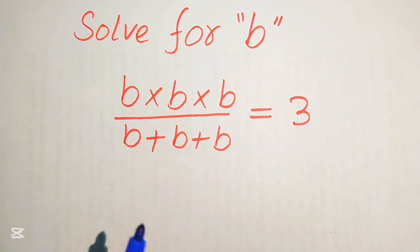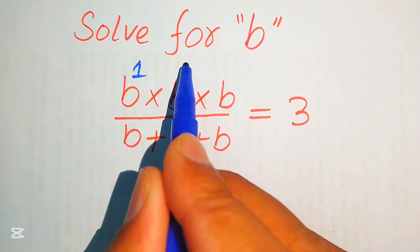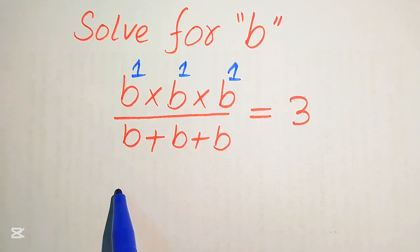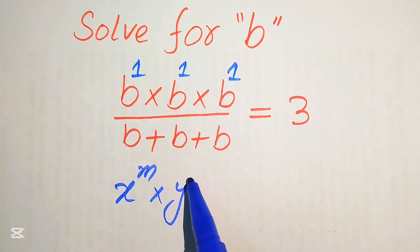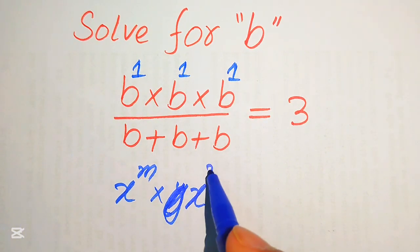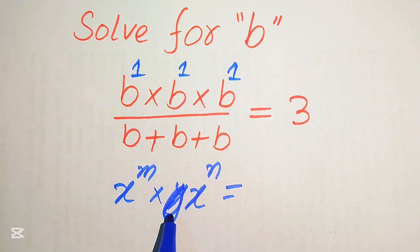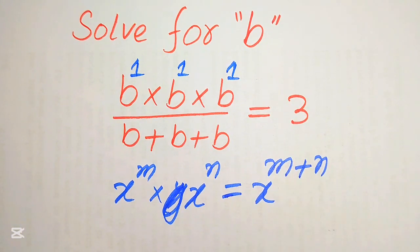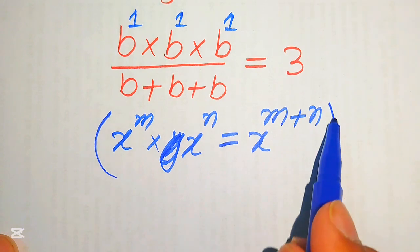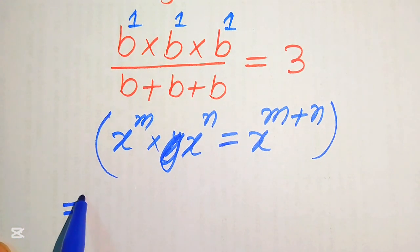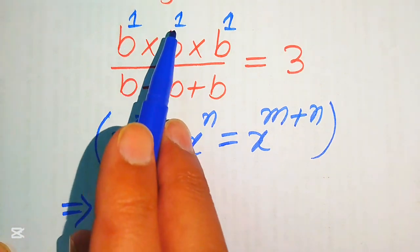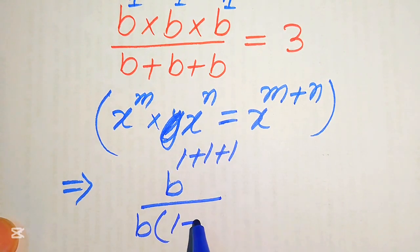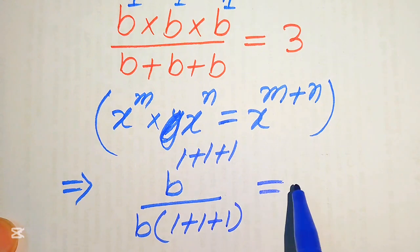The first step: the exponent of all three terms in the numerator is 1. We apply the exponent law — if you have x to the power of m multiplied by x to the power of n, and the bases are the same, we add the exponents to get x to the power of m plus n. So the numerator becomes b to the power of 1 plus 1 plus 1, and in the denominator we factor out b to get b times (1 plus 1 plus 1), all equals 3.